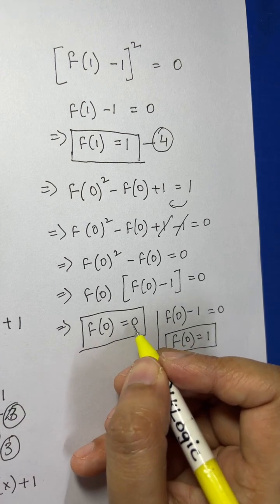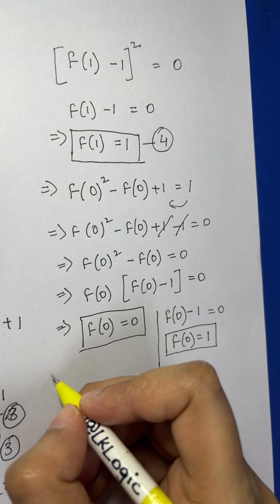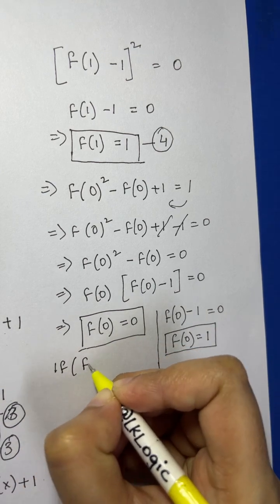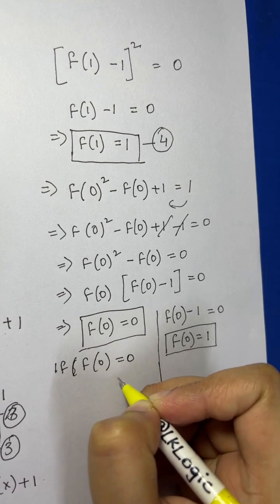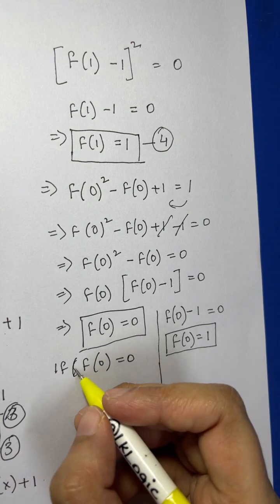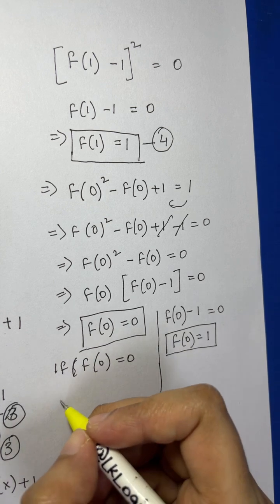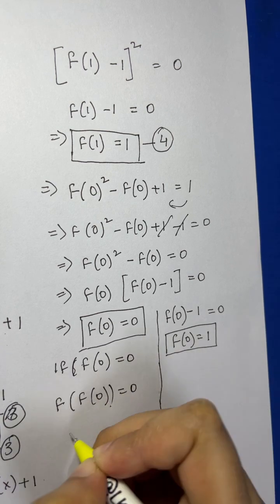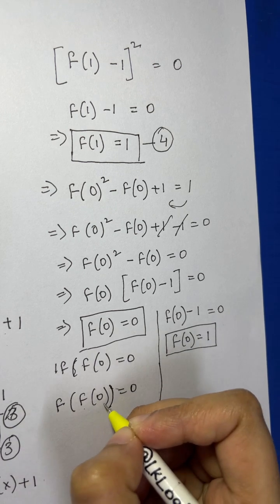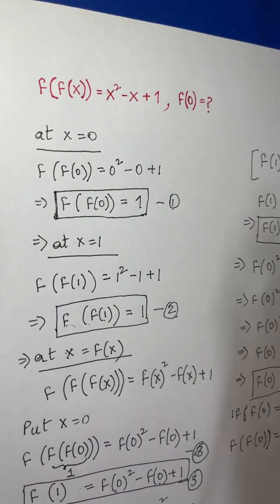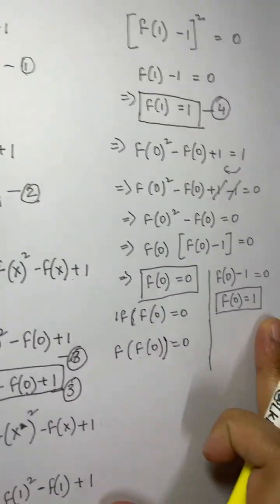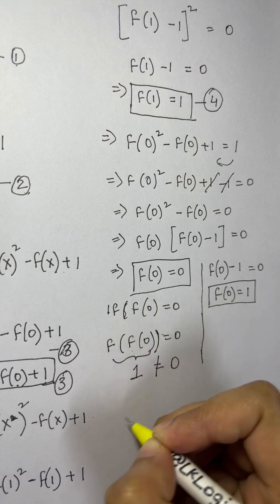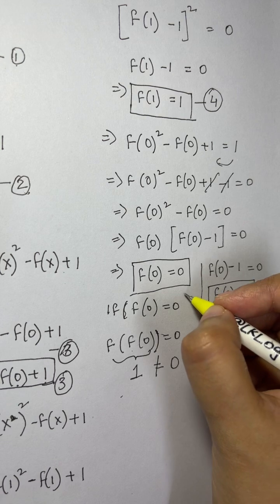Let's check which solution is valid. If f(0) = 0, then applying f to both sides gives f(f(0)) = f(0) = 0. But from Equation 1, f(f(0)) = 1, so 0 = 1, which is not possible. So f(0) = 0 is not possible.